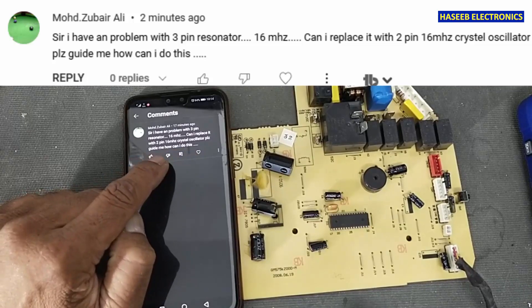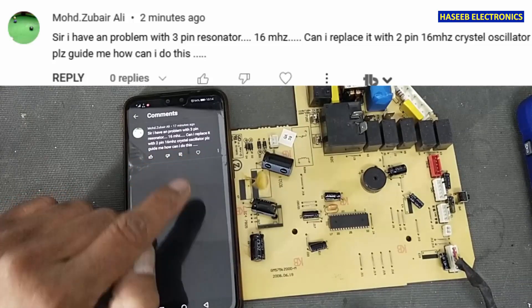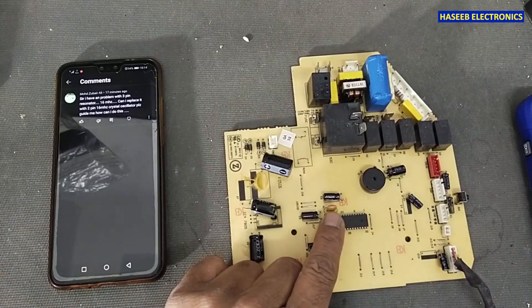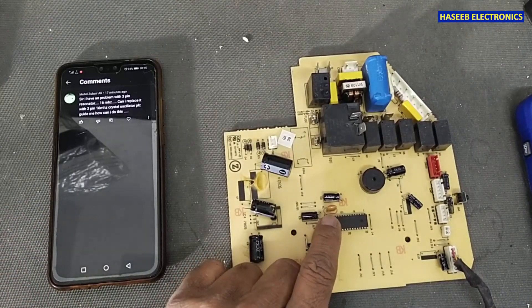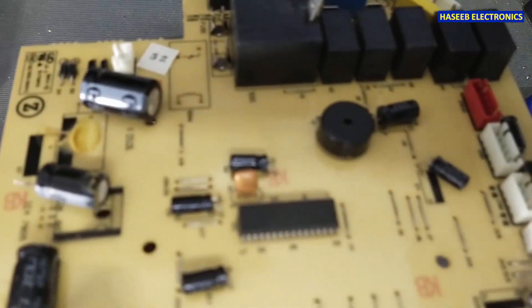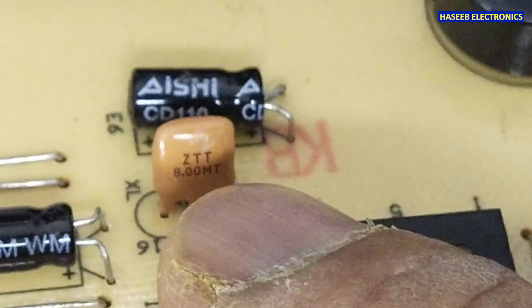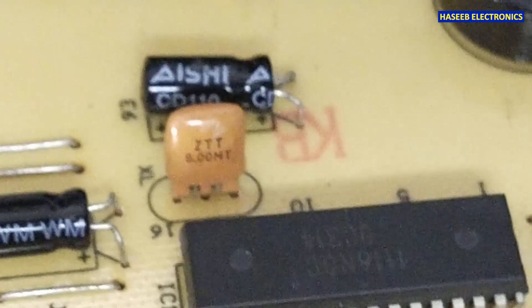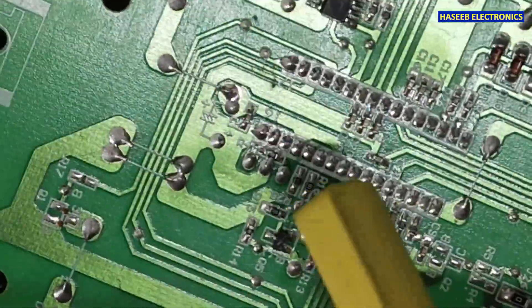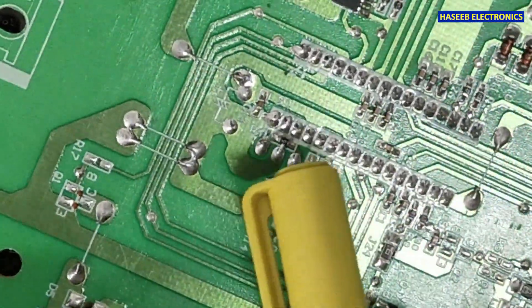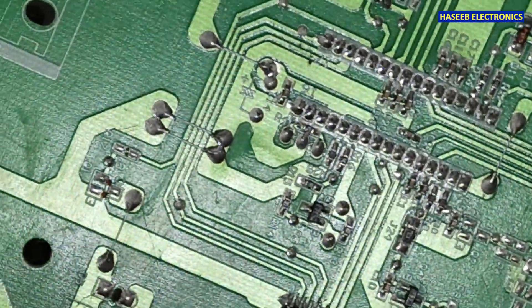Please guide me how can I do this. First of all, we need to understand the pin configuration. Ceramic resonator three-pin, here is eight megahertz. If you have 16 megahertz, pin configuration will remain the same. If we check here in the rear side, pin one, two, and three, it have three pins.